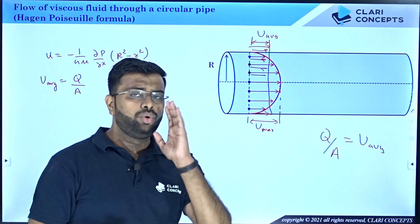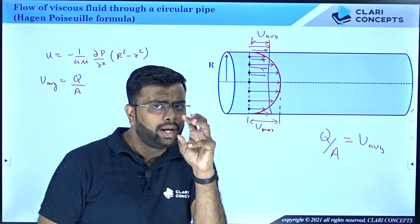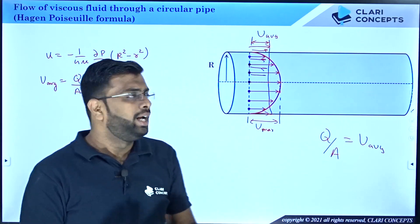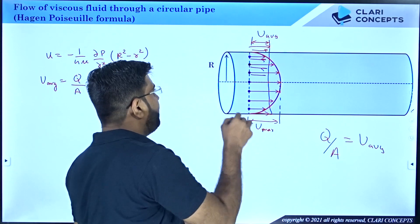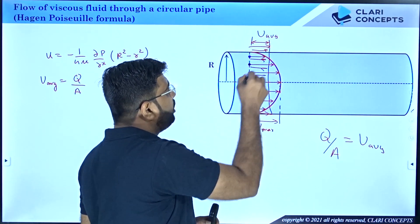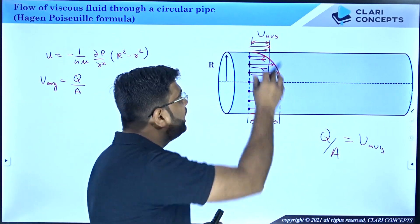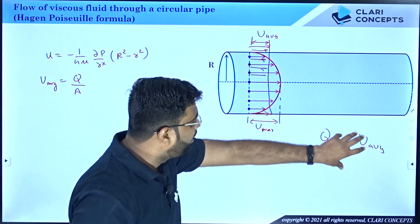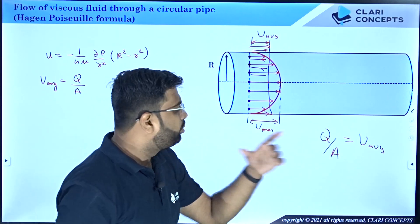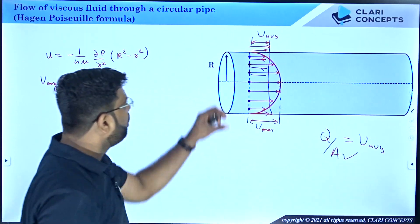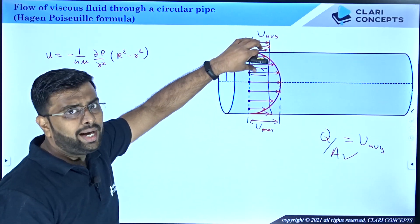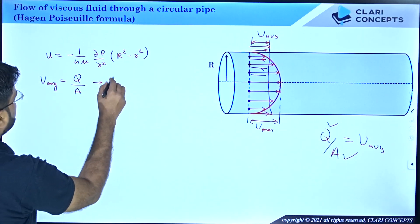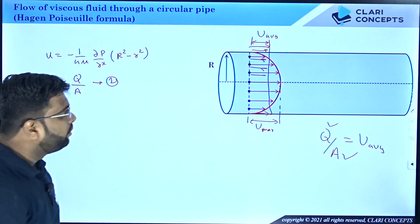If I divide the flow rate by the area, I will get U_average. The area is π R². Capital R is known. But first I need to calculate Q, the total flow rate. To do this, because velocity varies at every point in the section, I will consider a thin ring element at radius r with thickness dr.